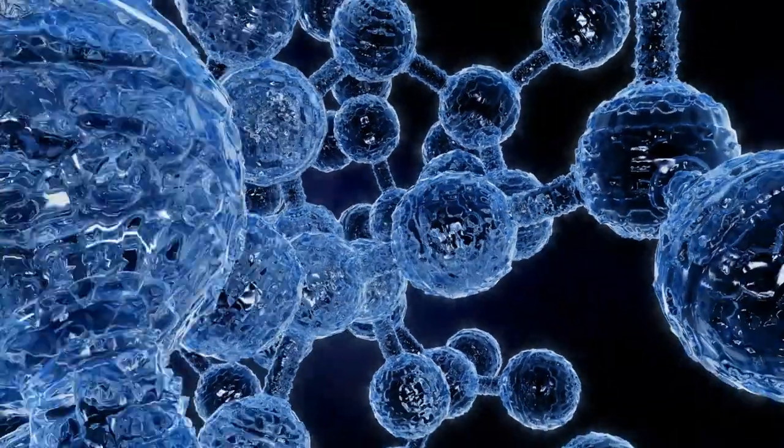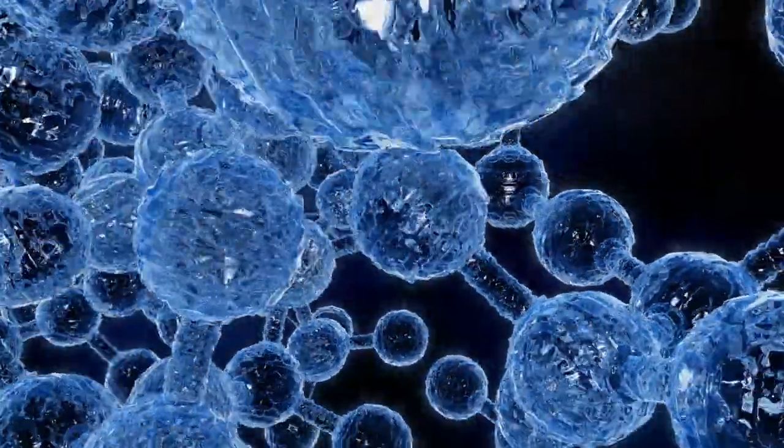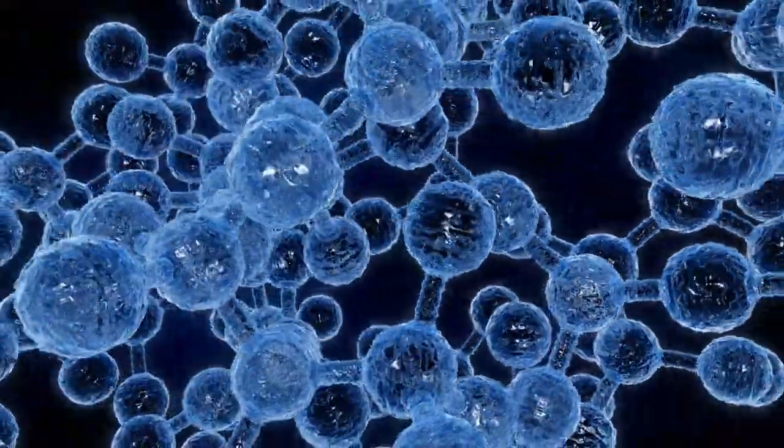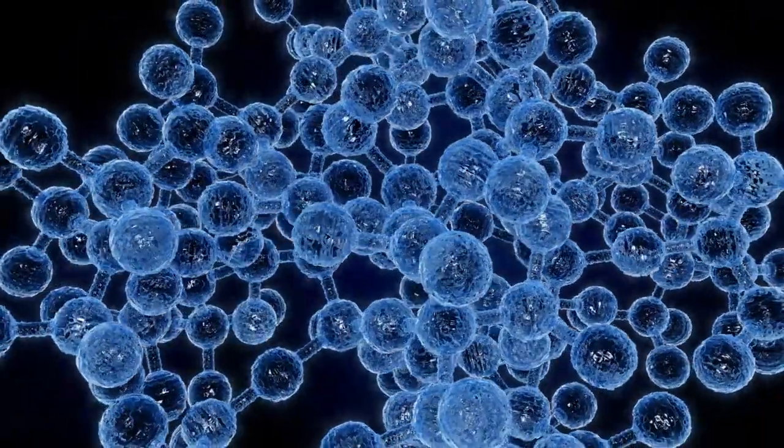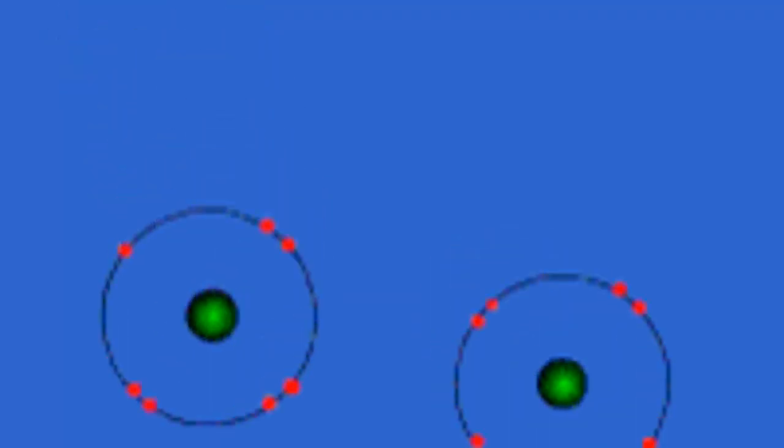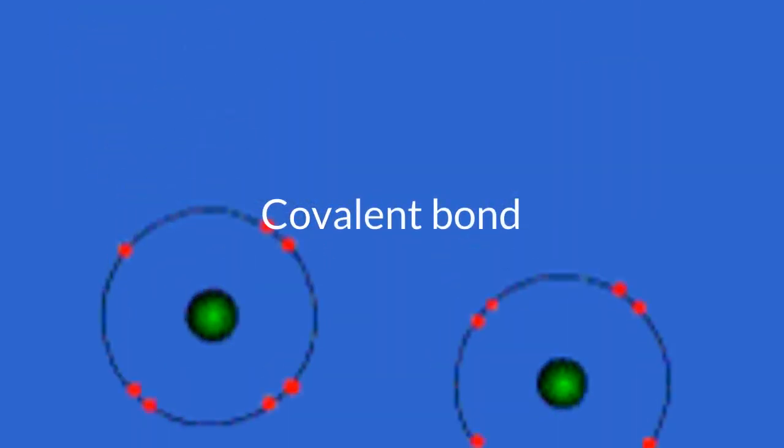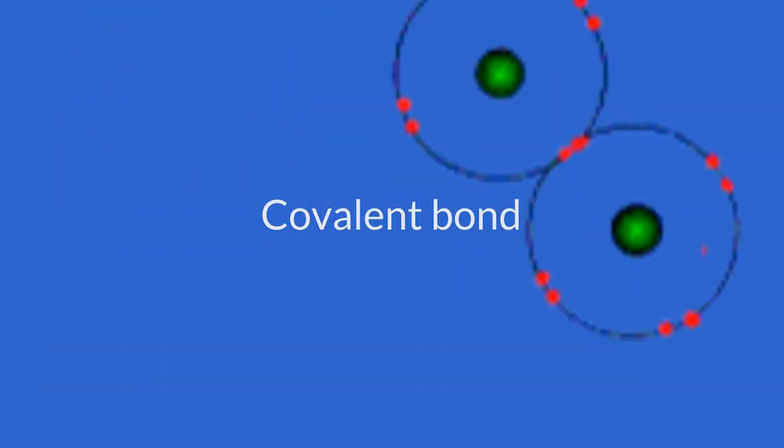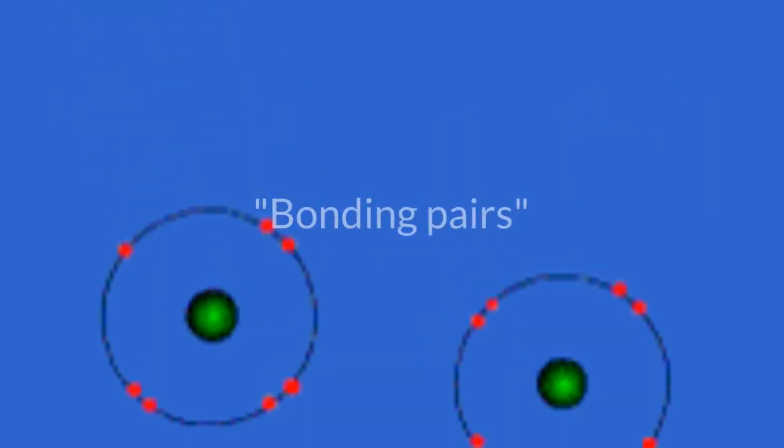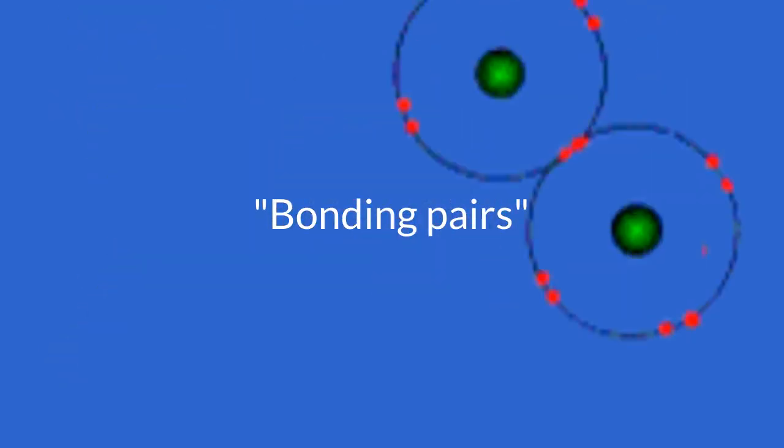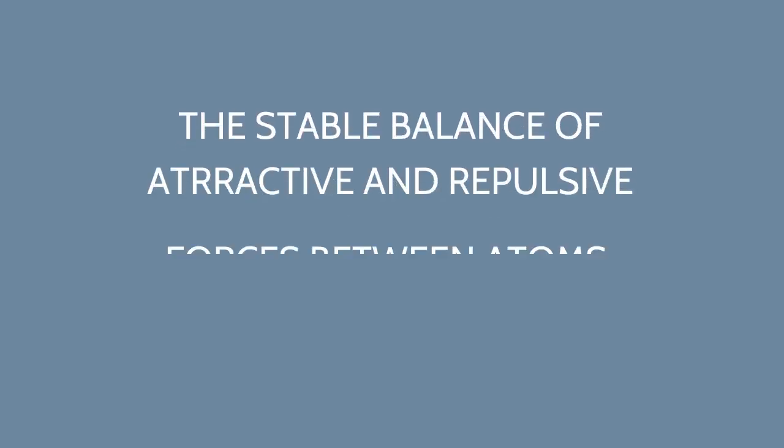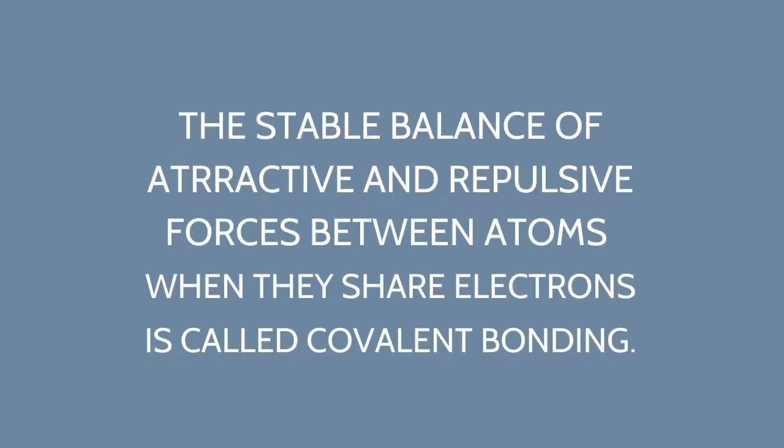Atoms come together to form molecules because of their electrons. Electrons can join atoms together in two main ways. When two atoms share electrons between them, they are locked together or bonded by that sharing. These are called covalent bonds. The electron pairs are termed bonding pairs or shared pairs. The stable balance of attractive and repulsive forces between atoms when they share electrons is called covalent bonding.